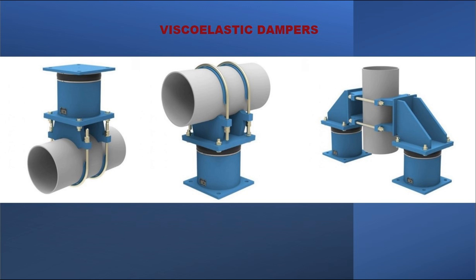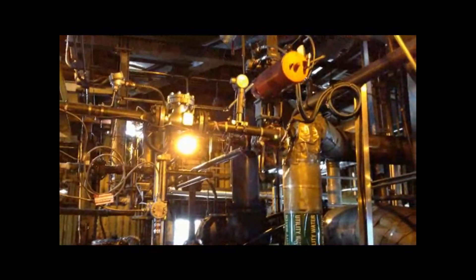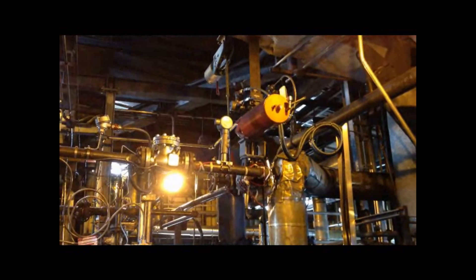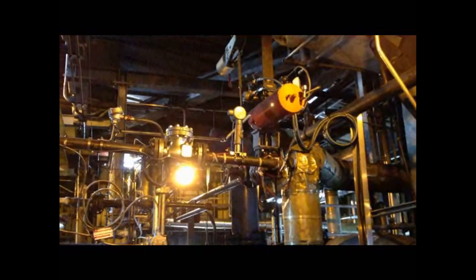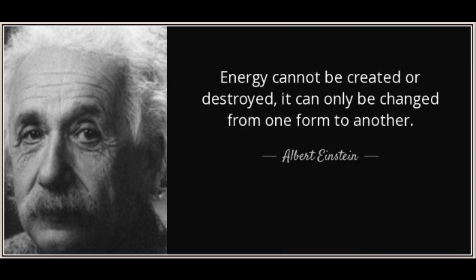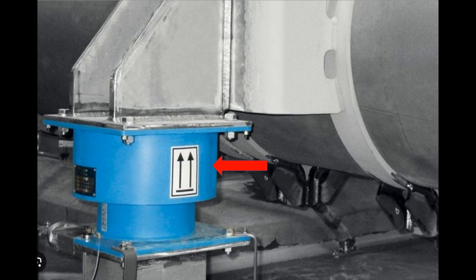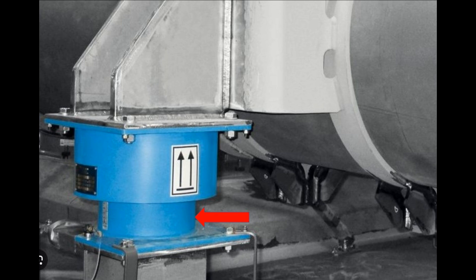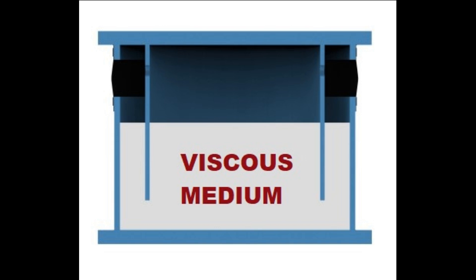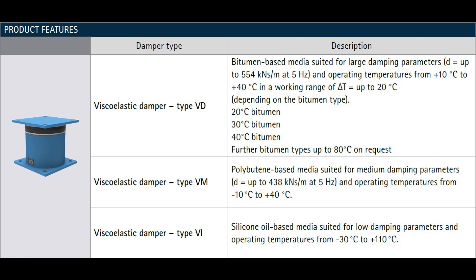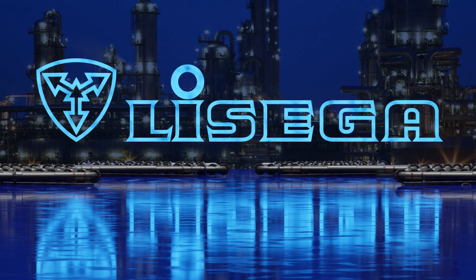Lastly, let's take a brief look at viscoelastic dampers. In operational plants, unforeseen vibrations in piping and equipment are a common occurrence. These vibrations can stem from various factors, and it's important to minimize them if their amplitude and frequency can cause harm to the piping system. A viscoelastic damper has two main components — one attaches to the vibrating pipe or equipment and the other to a fixed structure. Inside is a highly viscous substance that converts the kinetic energy of vibrations into heat. Different viscosity fluids are used based on ambient temperature and vibration frequency, making these dampers effective across a wide range of vibration frequencies.